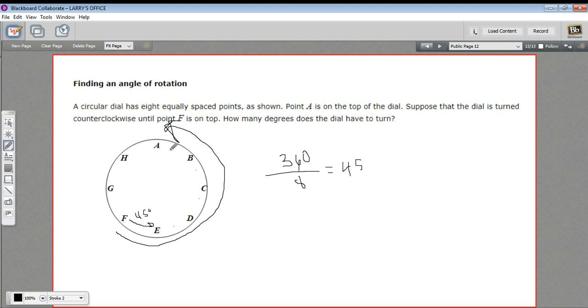So I just multiply 45 times 5, and I get 225 degrees. So that's a little bit of work with finding an angle of rotation.